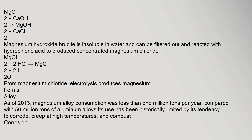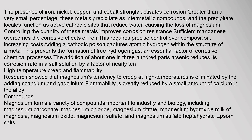As of 2013, magnesium alloy consumption was less than 1 million tons per year, compared with 50 million tons of aluminum alloys. Its use has been historically limited by its tendency to corrode, creep at high temperatures, and combust. The presence of iron, nickel, copper, and cobalt strongly activates corrosion. These metals precipitate as intermetallic compounds, and the precipitate locales function as active cathodic sites that reduce water, causing the loss of magnesium. Controlling the quantity of these metals improves corrosion resistance. Sufficient manganese overcomes the corrosive effects of iron.